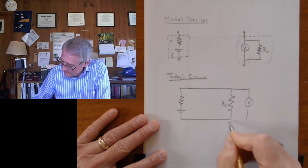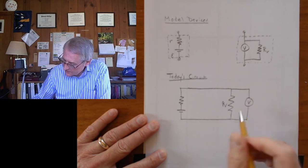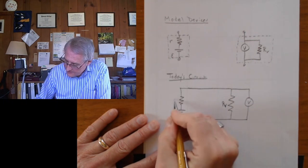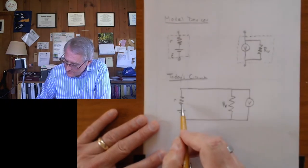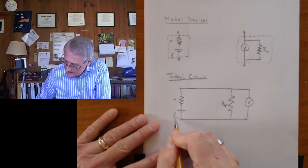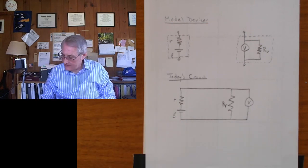So this together represents the voltmeter with the internal resistance of the voltmeter. Here's the internal resistance of the cell and here's the EMF of the cell, the internal EMF of that cell.